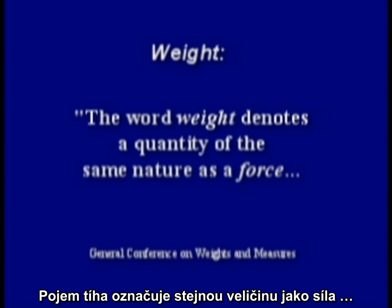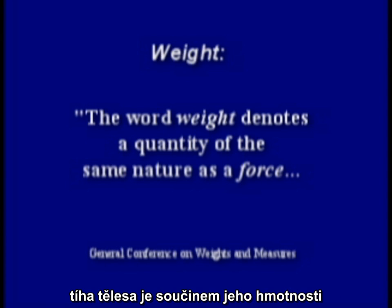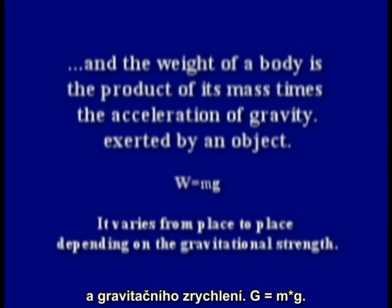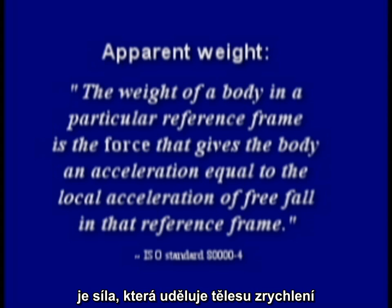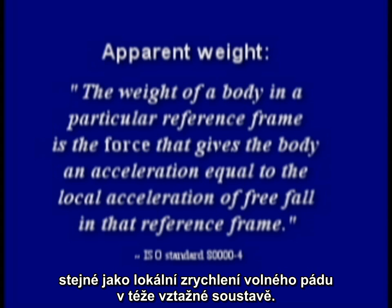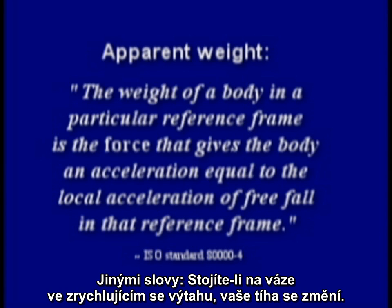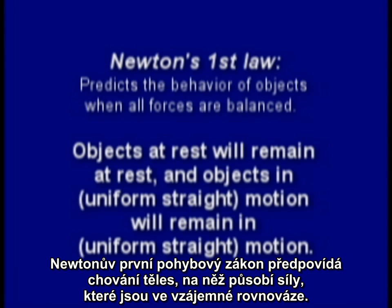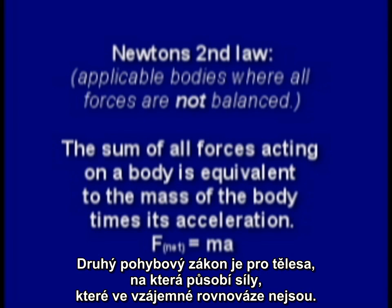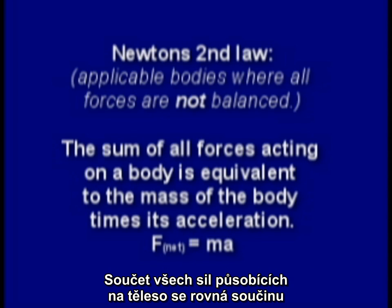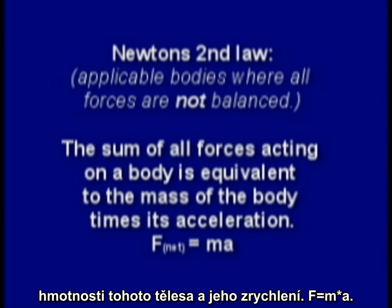The word weight denotes a quantity of the same nature as a force, and the weight of a body is the product of its mass and the acceleration due to gravity: W equals mg. The apparent weight of a body in a particular reference frame is the force that gives the body an acceleration equal to the local acceleration of freefall in that reference frame — in other words, if you stand on a scale in an accelerating elevator, your weight will vary. Newton's first law predicts the behavior of objects when all forces are balanced: objects at rest will remain at rest, and objects in motion will remain in motion. His second law applies to bodies where forces are not balanced: F equals ma.